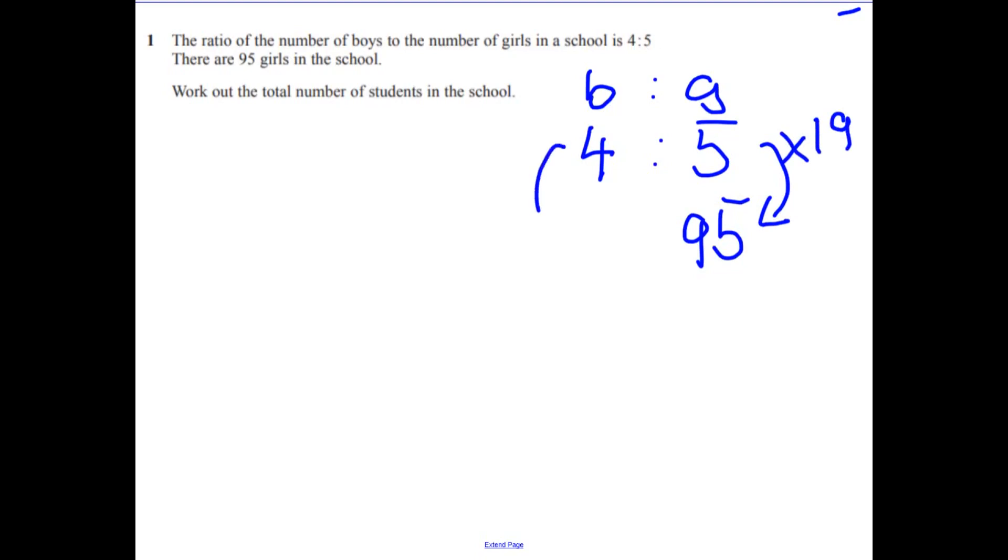So do the same for boys. Times that by 19. So 4 times 19 is going to be 76. And we can use your calculator.